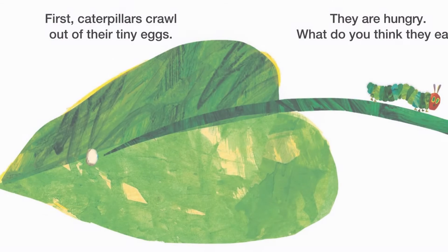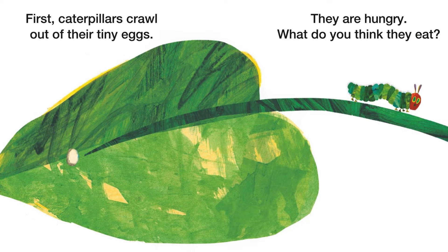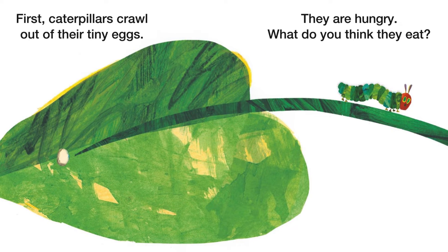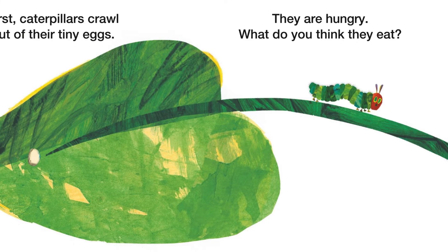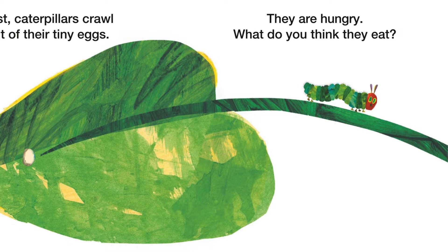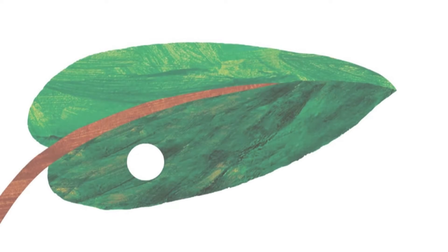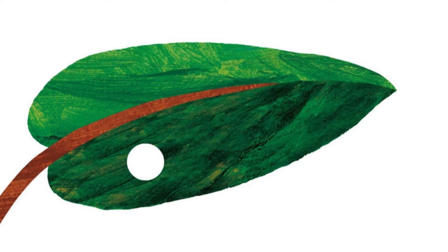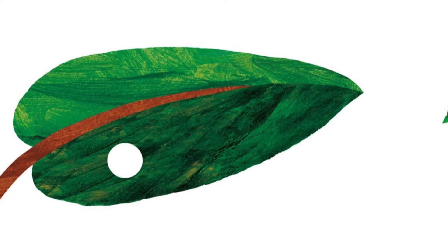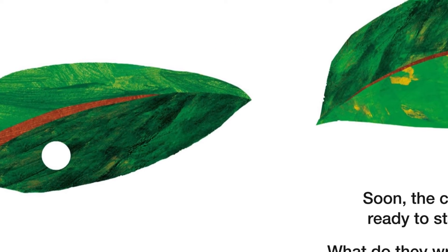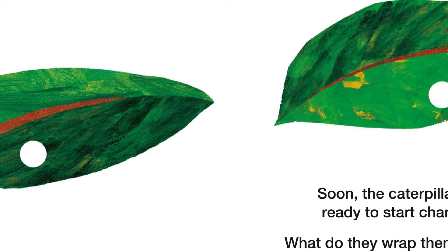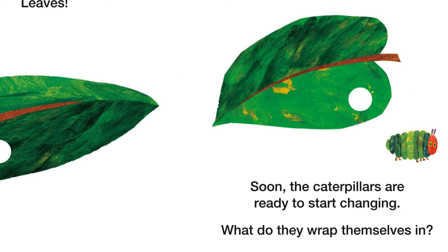First, caterpillars crawl out of their tiny eggs. They are hungry — what do you think they eat? Leaves! Soon the caterpillars are ready to start changing. What do they wrap themselves in?